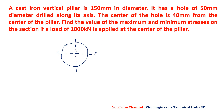The hole is 50 mm in diameter and its center is 40 mm from the pillar center, meaning the hole extends 10 mm beyond the midpoint on one side. The load of 1000 kilonewtons acts at this offset center.